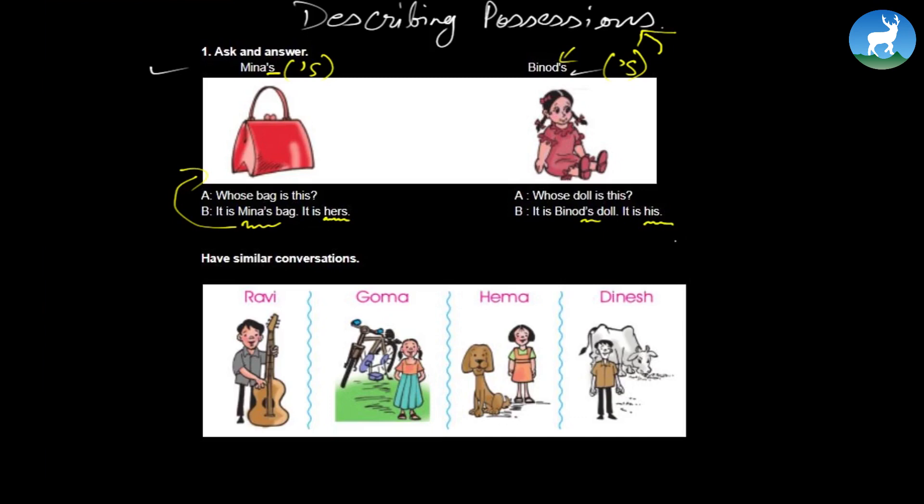It is hers. Now Binod's, whose doll is this? It is Binod's doll. It is his. And also do take care of hers and his. This apostrophe, this hers, this his, they also belong in this. So this is a conversation here.